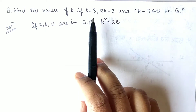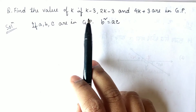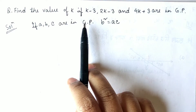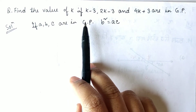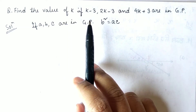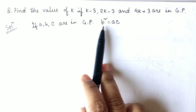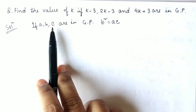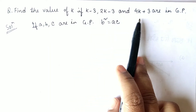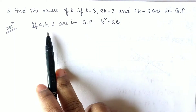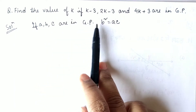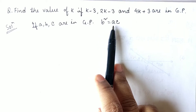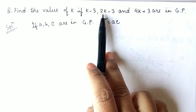Here k is an unknown variable and we have to find its value. We will use the formula: if three terms are in GP, then b squared equals ac. In this question, (2k minus 3) is the middle term.